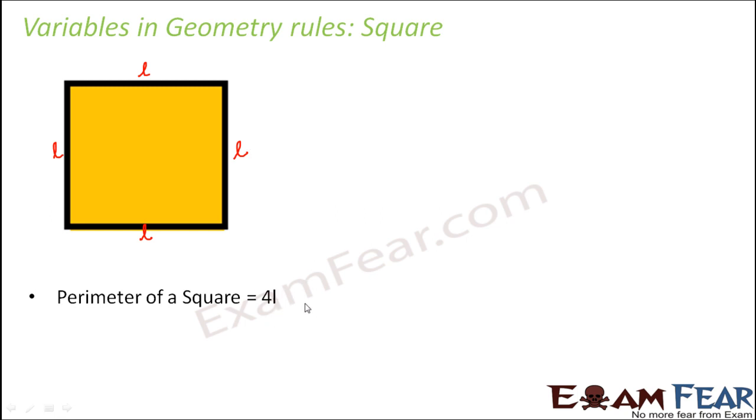So this is like a formula and we are making use of a variable in the formula. Similarly, if you have to find out the area of a square, that would be L into L, that is L multiplied by L. So that would give the area of the square.